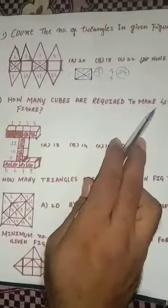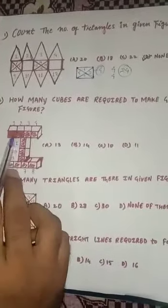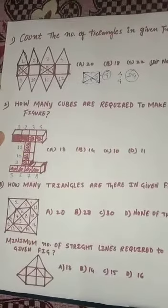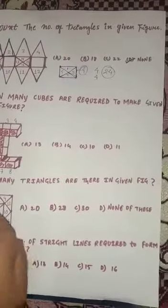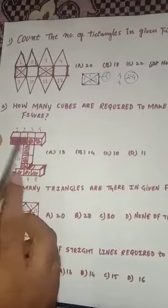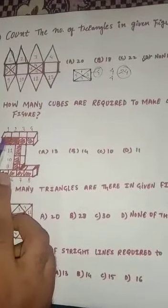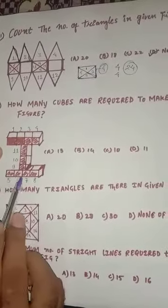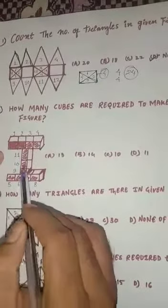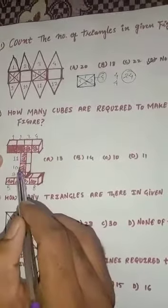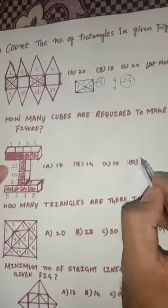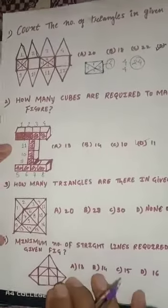Now the next question says: how many cubes are required to make the given figure, which looks like the letter I? To construct the upper part of I, we need 1, 2, 3, and 4 cubes. For the lower part it's 5, 6, 7, and 8. In the middle part there are 3 cubes: 9, 10, and 11. So we require 11 cubes to construct this I-shape.